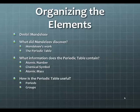We'll also talk about what information is shown on the periodic table. Specifically, we'll talk about atomic numbers, chemical symbols, and atomic masses. Those are the three main things that we'll come away with in this lesson. And then finally, we'll talk about how the periodic table is useful to us. We'll look at groups and periods in that section.